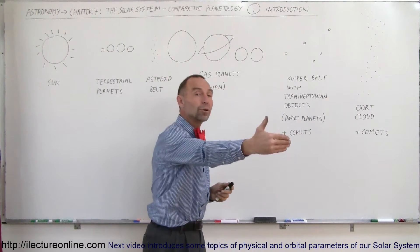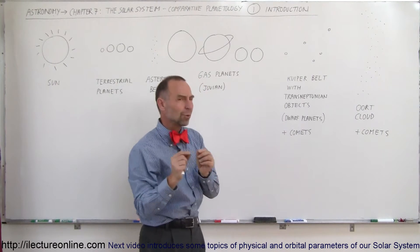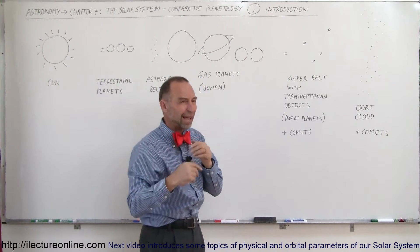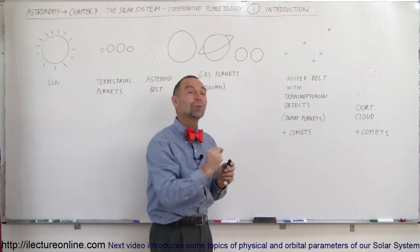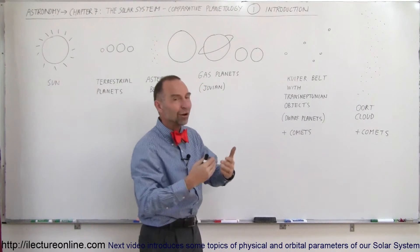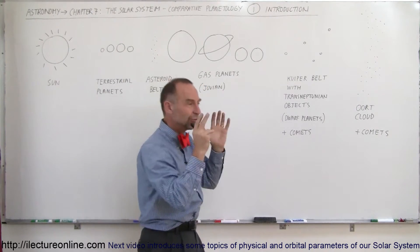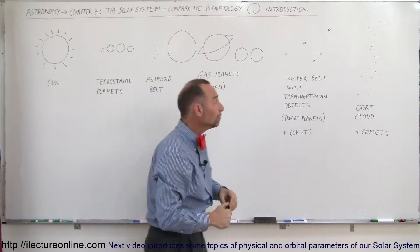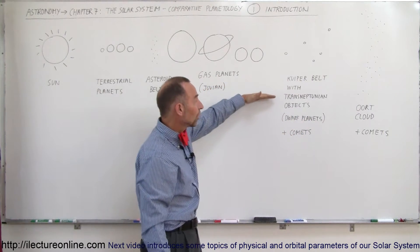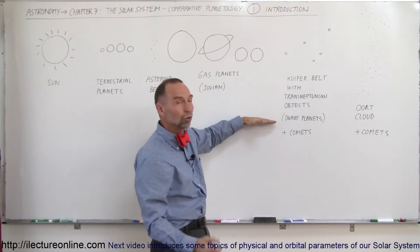Objects that are beyond the orbit of Neptune. Of course, we realize that Pluto, for a very short period of time, every 248 years, comes within the orbit of Neptune. But by and large, the trans-Neptunian objects are farther away, on average, than Neptune. And so there's a bunch of those. We call them trans-Neptunian objects. They're also the dwarf planets.